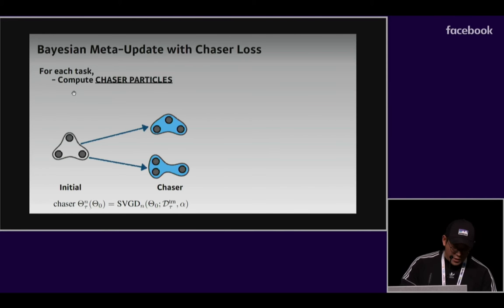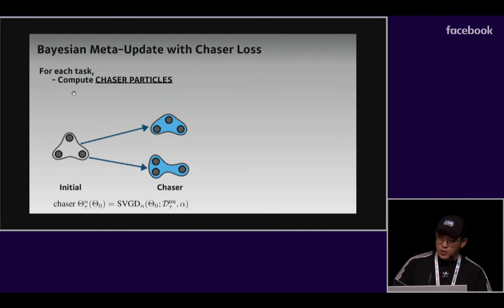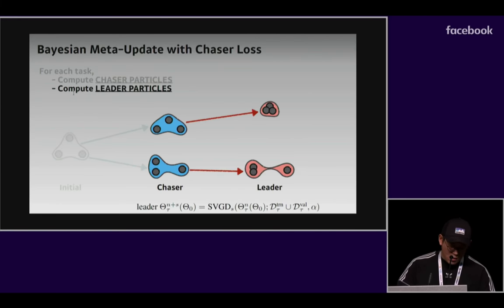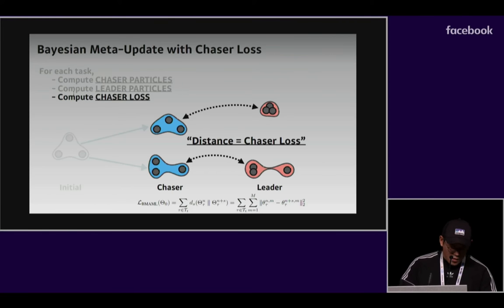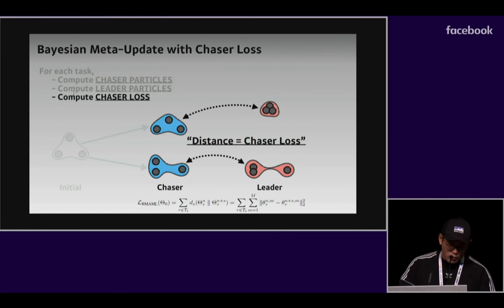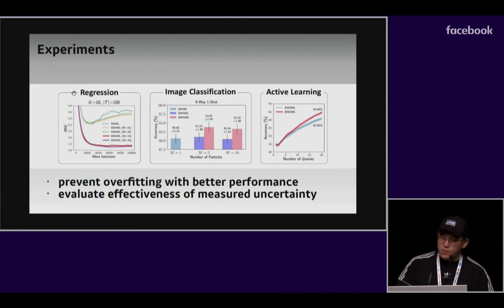In more detail, for each task, the Chaser particles are computed from the initial using SVGD. Then the leader particles are similarly computed, but by taking more steps from the Chaser particles. The distance between Chaser and leader particles is computed and then optimized with respect to the initial particles.